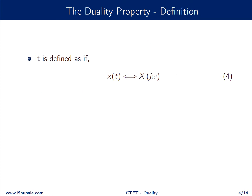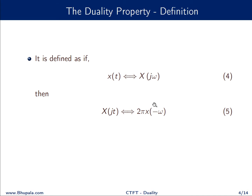Now let us directly jump into the definition of the duality property. It says that if x(t) has X(jω) as the Fourier transform, then by replacing ω with t and taking the Fourier transform, it would be equal to 2π times X(−ω). Looking at these two relations carefully, we see that the duality property is concerned with taking the Fourier transform of the signal x(t) twice.